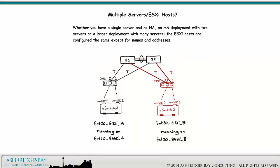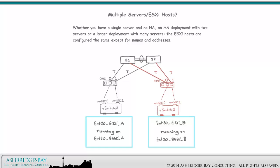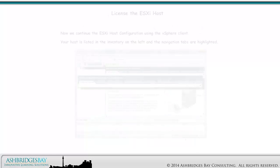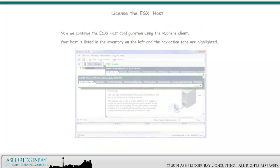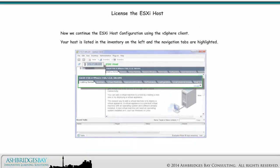Whether you have a single server and no HA, an HA deployment with two servers, or a larger deployment with many servers, the ESXi Hosts are configured the same except for names and addresses. Now we can continue the ESXi Host configuration using the vSphere client.